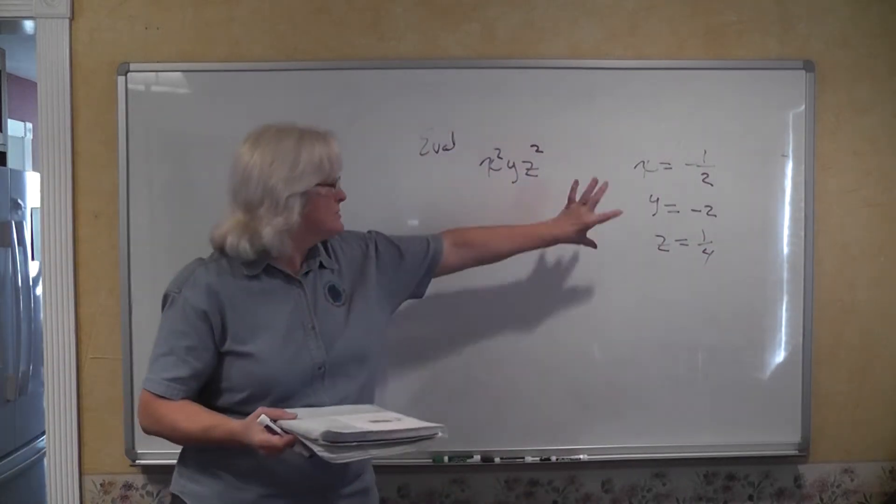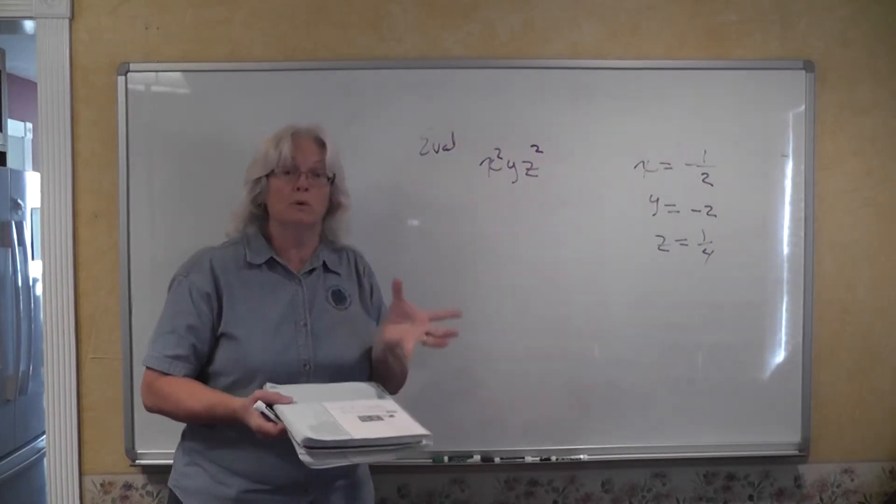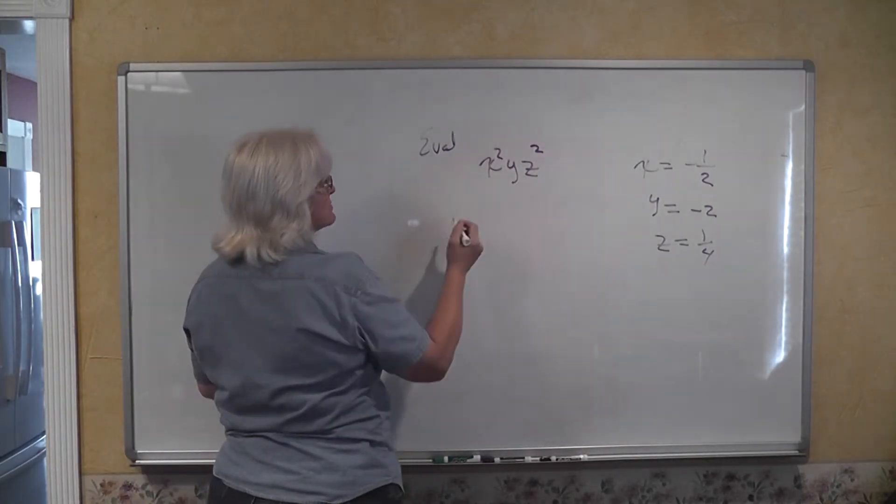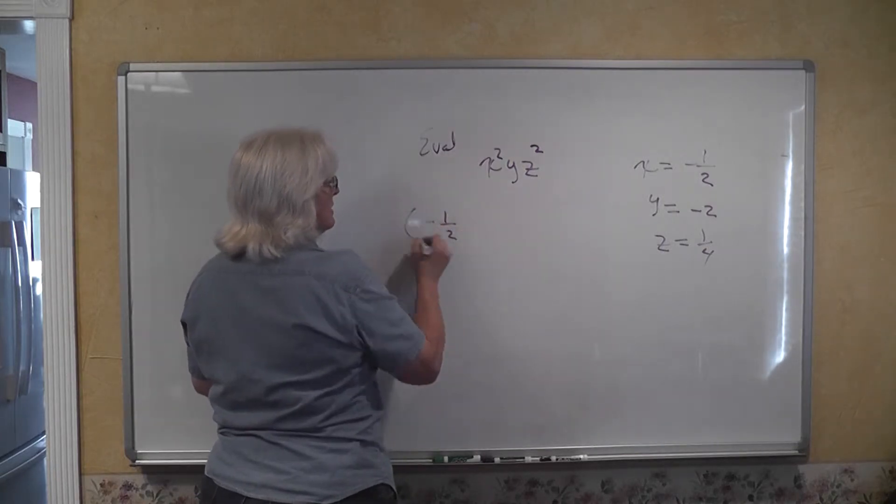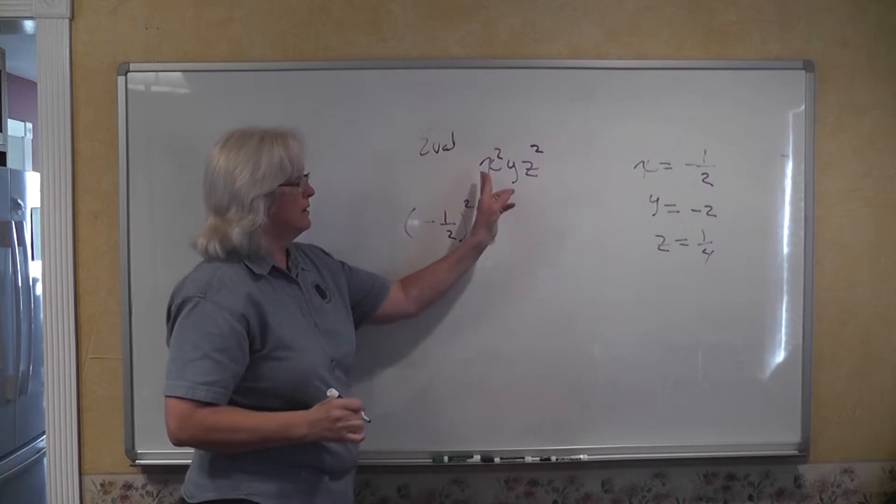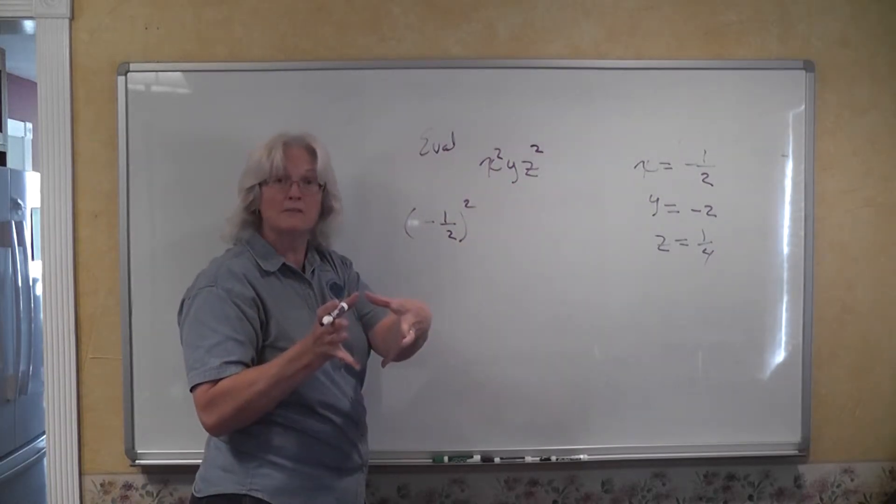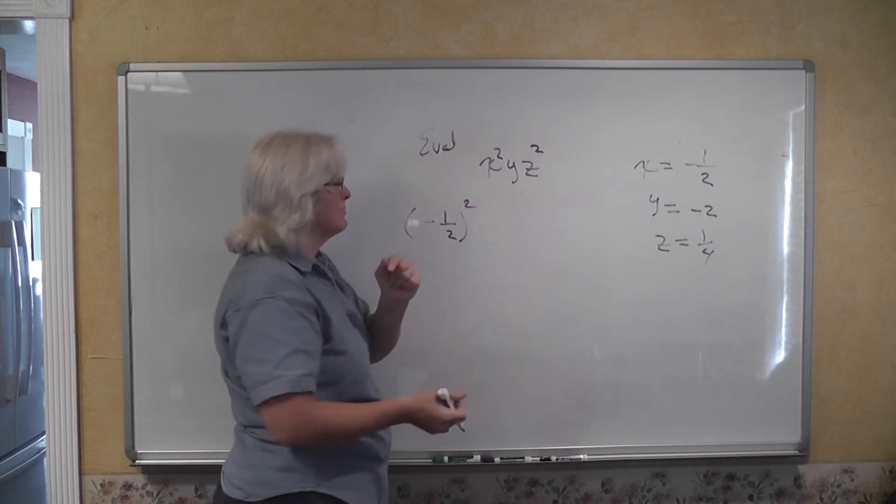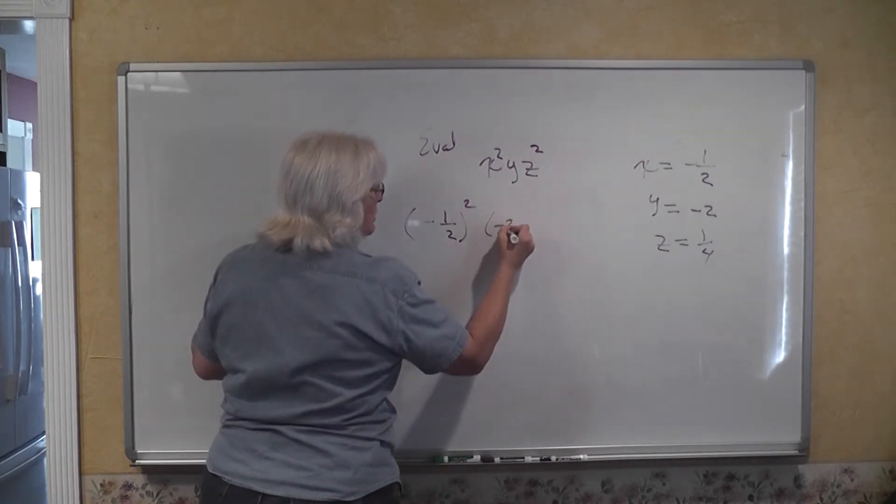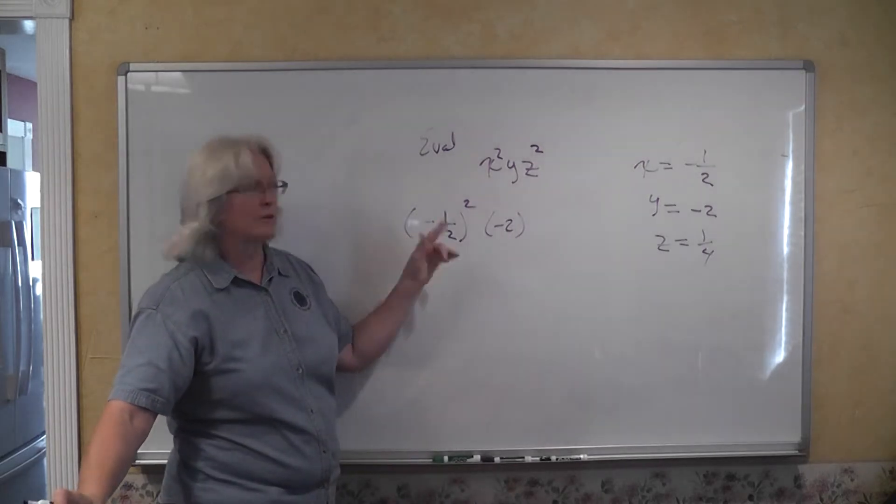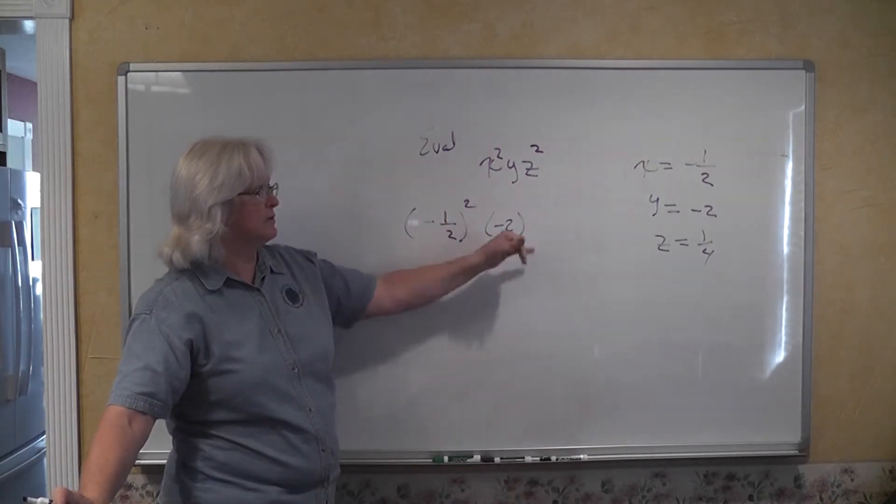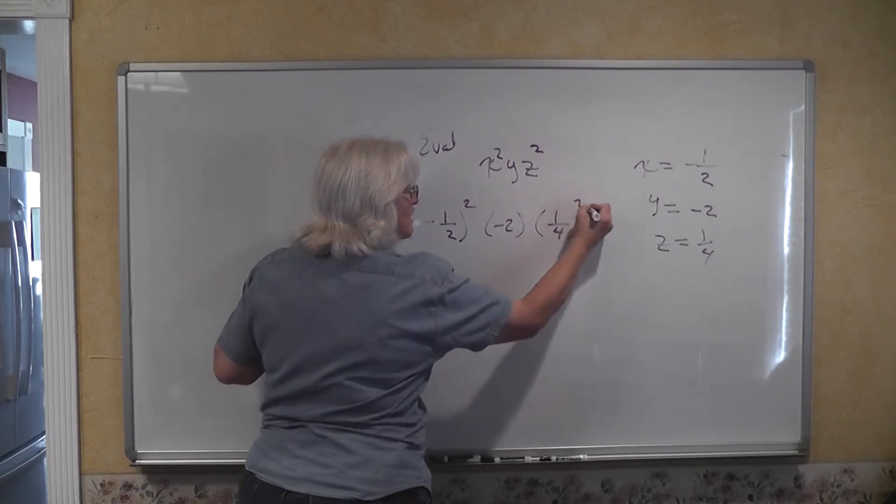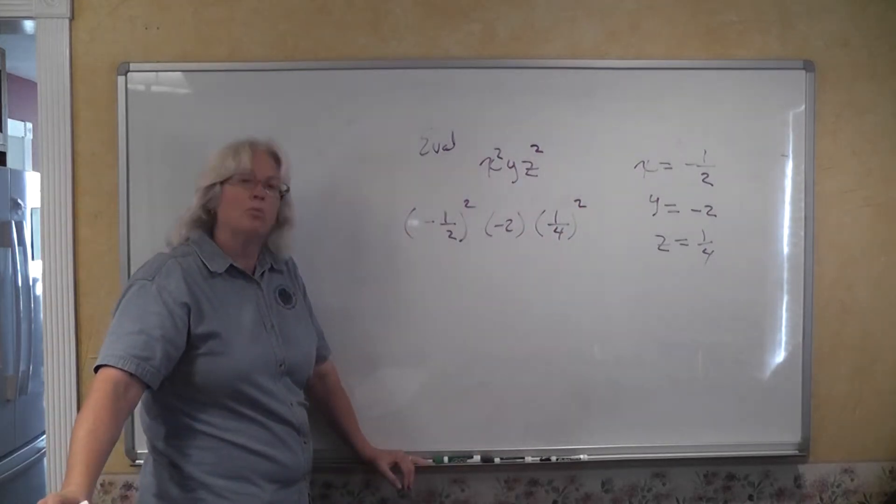Once again, when you substitute these values in for the variables, make sure you enclose them in parentheses. We have x squared, so that's going to be a negative 1 half in parentheses squared. If you need to put a little raised dot in there to indicate multiplication, you can do it. But just having the parentheses bumped up against one another indicates multiplication. So we have negative 1 half quantity squared times a negative 2 times 1 fourth squared.